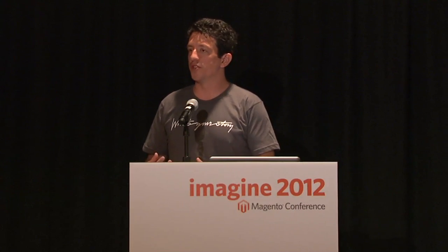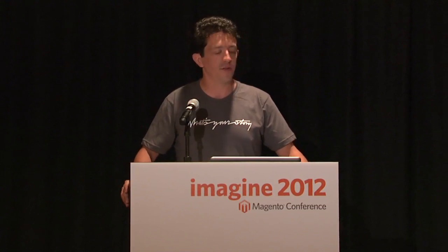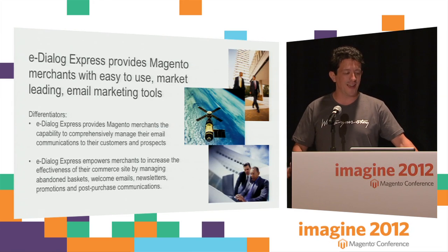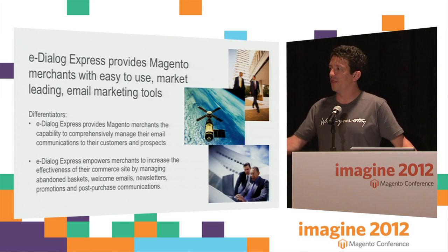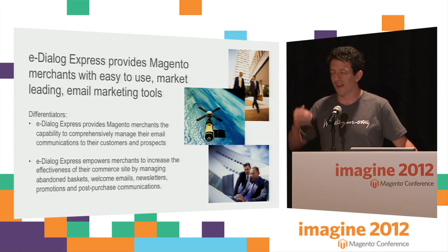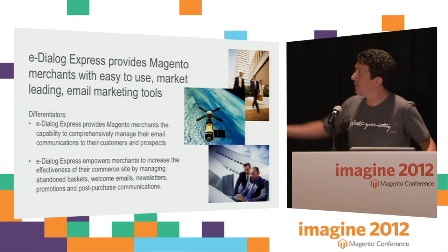One of our next stories is one of the key components of X.Commerce as we mature. By bringing together the power of Magento and some of our other properties such as GSI, we're able to take previously white-glove, high-end services offered only to GSI merchants and make them available to Magento merchants. This is the first example: eDialog Express. eDialog Express takes the power of the GSI email marketing solution and allows Magento merchants to leverage that previously enterprise-level solution. Tink, if you want to take it away.